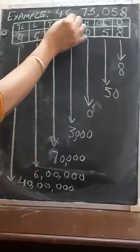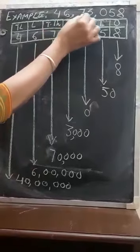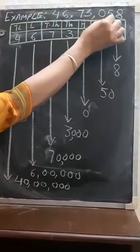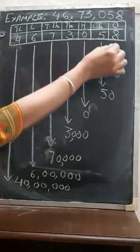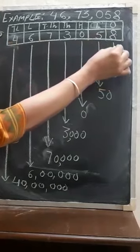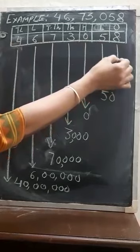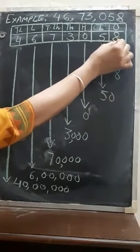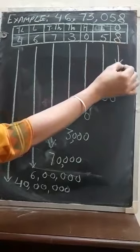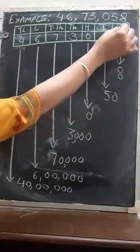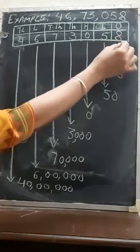I am going to describe through this example. The numeral is 46,73,058. We have placed all the digits in the chart. 8 is at the ones place. The place value of 8 is the multiplication of face value and place value — 8 multiplied by 1. 8 is the face value and 1 is the place. When you multiply both of them, you get 8.